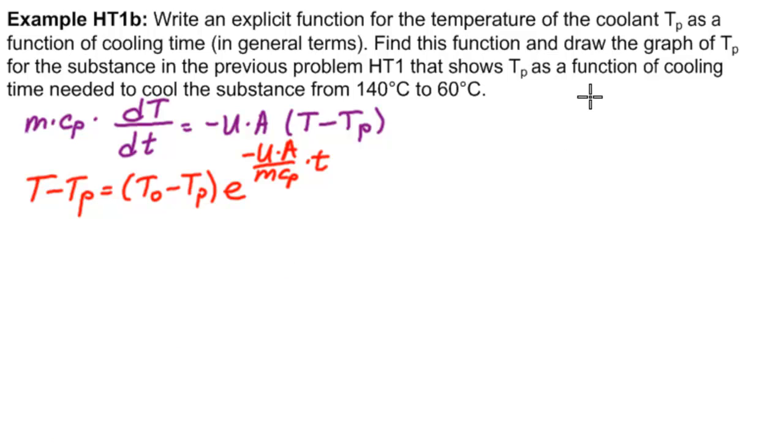So we're looking for a table of values. We had TE and we calculated TP. Remember, big TE is 60. And we found that when it was 1 hour, we needed 13.45 degrees Celsius.